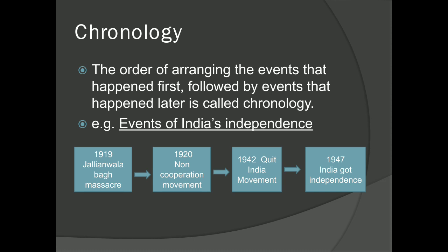Here is an example from India's independence, showing events in order. In 1919, the Jallianwala Bagh massacre happened. In 1920, the Non-Cooperation Movement happened. In 1942, the Quit India Movement happened. And finally, in 1947, we got our independence.